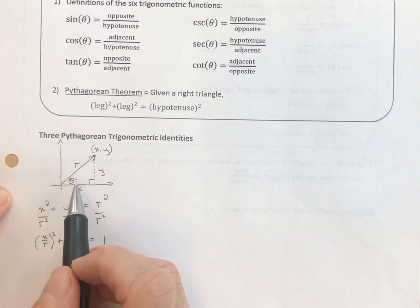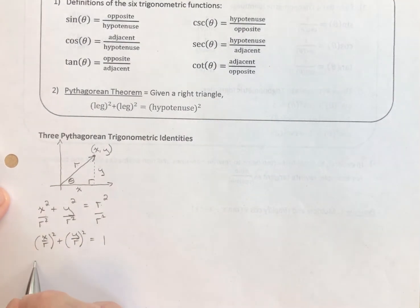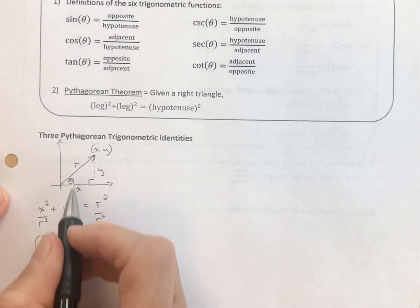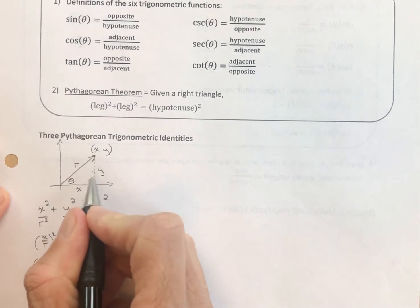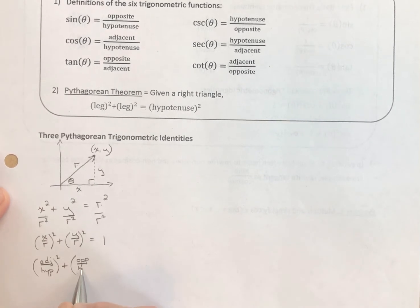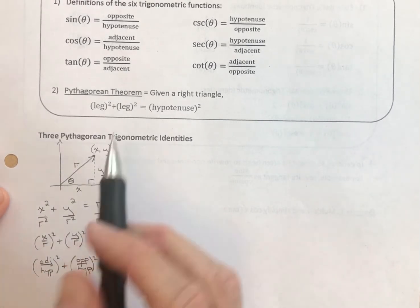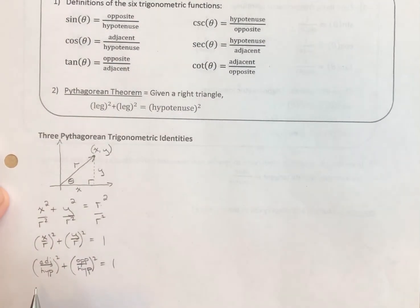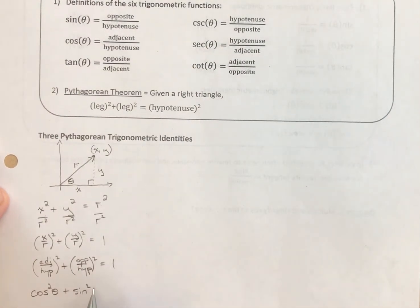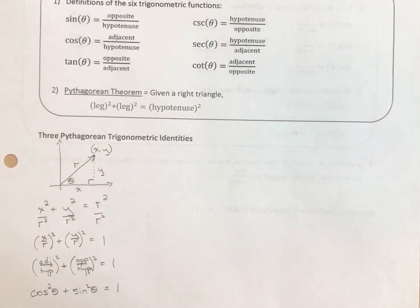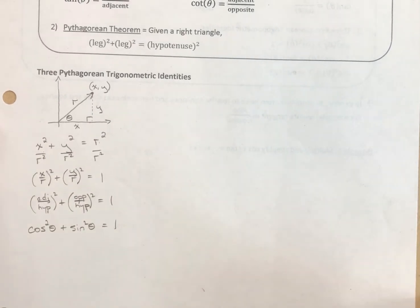So what is x? When it comes to theta, x is the adjacent side, and r is the hypotenuse. So the adjacent over the hypotenuse, squared, plus — y is the opposite side — the opposite over the hypotenuse, squared, equals one. The adjacent over the hypotenuse is the definition of cosine, so this is cosine squared of theta. The opposite over the hypotenuse is the definition of sine, so this is sine squared of theta equals one. And that is our first Pythagorean identity.